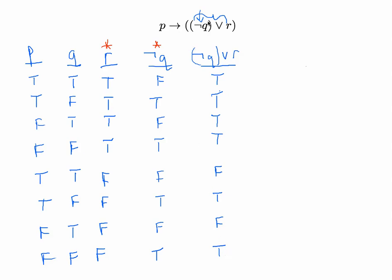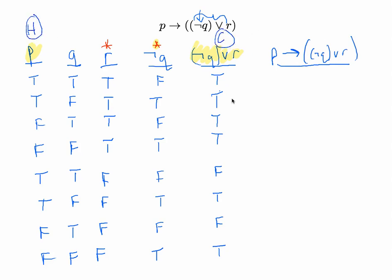Now the last column is for the main proposition: P implies (not Q or R). We're going to look at the column for (not Q or R) and the column for P. This is an implication — a conditional statement — where P is the hypothesis and (not Q or R) is the conclusion. A conditional statement is true in all cases except where the hypothesis is true but the conclusion is false.